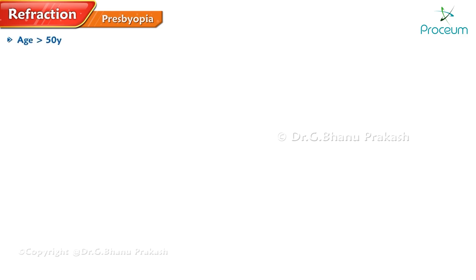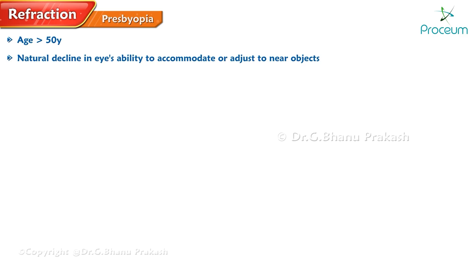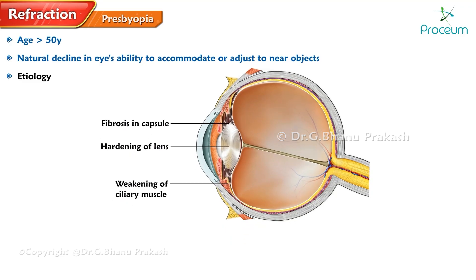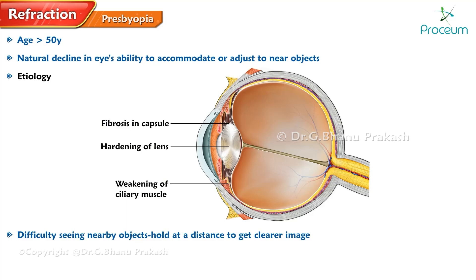Presbyopia is a condition that commonly affects individuals over the age of 50, resulting in a natural decline in the eye's ability to accommodate or adjust to near objects. This is caused by the hardening of the lens, fibrosis in the capsule, and weakening of the ciliary muscles. As a result, people with presbyopia have difficulty seeing nearby objects and tend to hold them at a distance to get a clearer image on the retina, while their distance vision is usually unaffected.